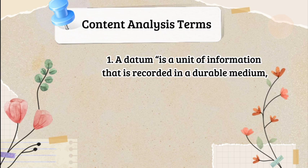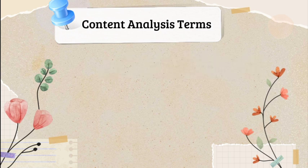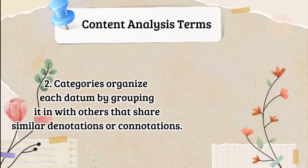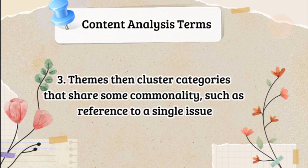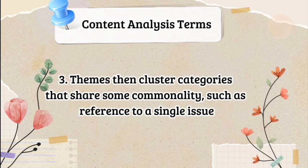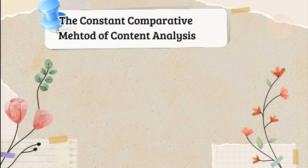Content analysis terms: 1) A datum is a unit of information that is recorded in a durable medium. 2) Categories organize each datum by grouping it with others that share similar denotations or connotations. 3) Themes then cluster categories that share some commonality, such as reference to a single issue.